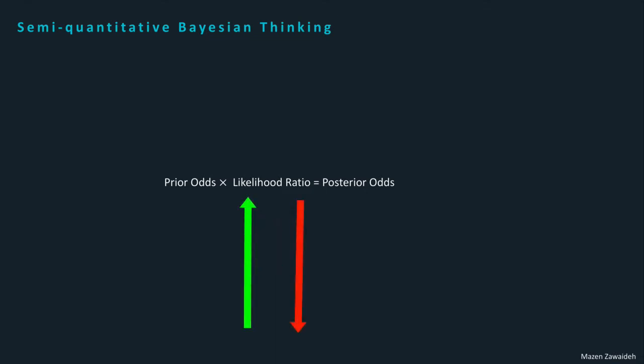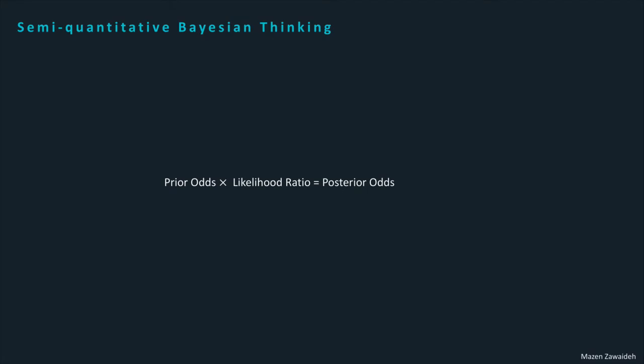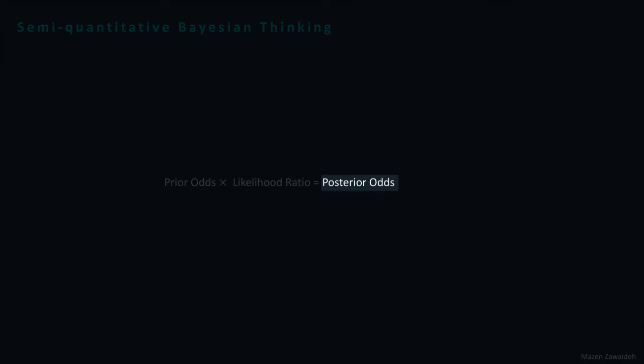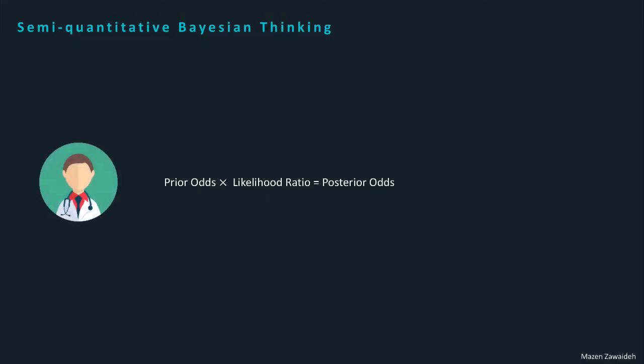The degree of influence that the examination has on our belief can range from small to large. This notion is captured in the likelihood ratio, which we will discuss further later. Our updated belief about the probability of disease presence is called the posterior belief — again expressed as odds to make the math simple.